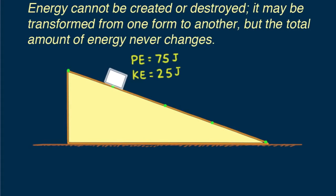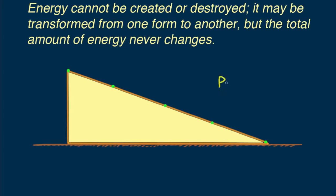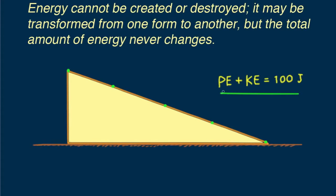Three-quarters of the way down, potential energy is 25 joules and kinetic energy must be 75 joules. Energy is conserved — not just kinetic energy and not just potential energy, but the total energy of the system is conserved: 100 joules at every point.